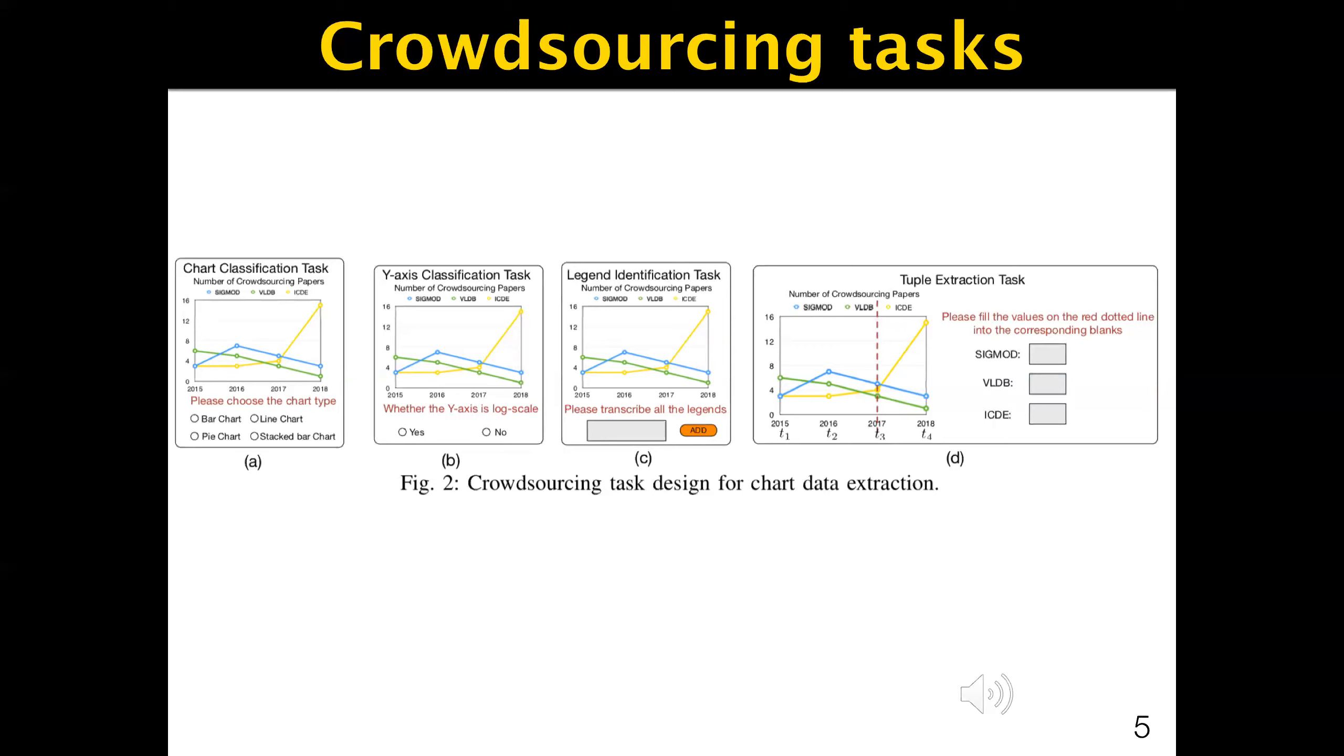First, as quality of chart data extraction may depend on visual features of the chart, we define three types of preprocessing tasks before extracting data. The first is the chart classification task. Intuitively, different types of charts have different difficulty levels for data extraction, which motivates us to first ask the crowd for chart classification. Given a chart C, a chart classifying task is a multi-choice question. Currently, we support bar chart, line chart, pie chart, and stacked bar chart, and ask the crowd to choose the one that chart C belongs to.